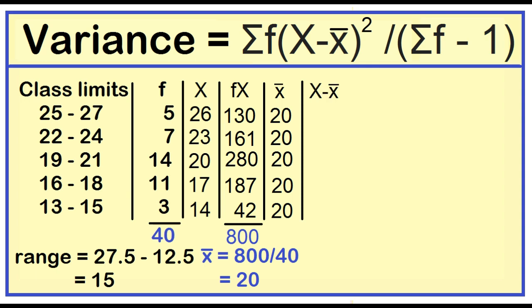Let's add a column also for the deviation from the mean. 26 minus 20 is 6. 23 minus 20 is 3. 20 minus 20 is 0. 17 minus 20 is negative 3. 14 minus 20 is negative 6.